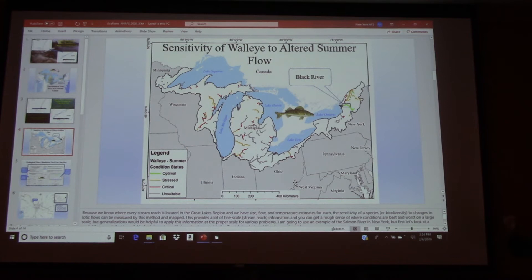And all I'm doing here is highlighting those sensitivity areas. We had green was optimal, and then yellow was stressed, and then it was critical. Throughout the Great Lakes Basin, this is what we have for large warm rivers with regard to walleye. And you'll see the Black River highlighted there. We'll take an example from that in a moment.